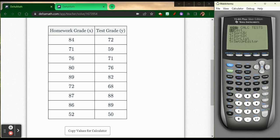I'm going to hit stat. I'm going to press the right arrow key to the calculate menu. And you'll see the fourth one down says Lin Reg. That's linear regression. Hit enter. List one, list two. Everything's good. Go down to calculate. Hit enter.